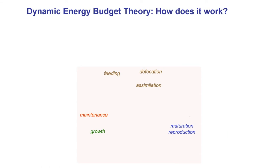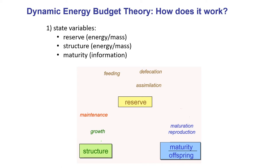How does it work? In setting up any thermodynamic system, the most important thing is working out the state variables. In DEB theory, the state variables that have been chosen are called the reserve, the structure, and the level of maturity. The reserve and structure can be thought of in dimensions of energy or mass — it's really a theory about mass, and probably should be called dynamic mass budget theory. Maturation is in the dimension of information.